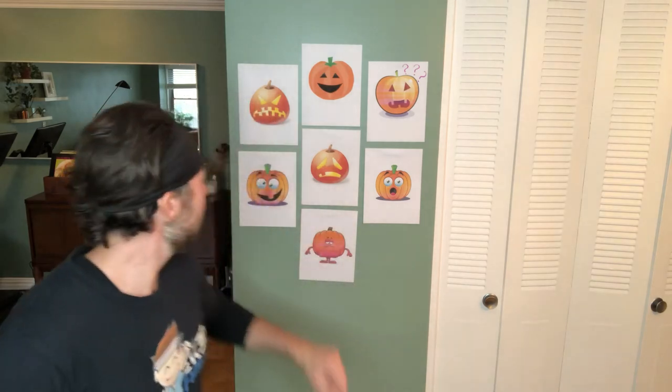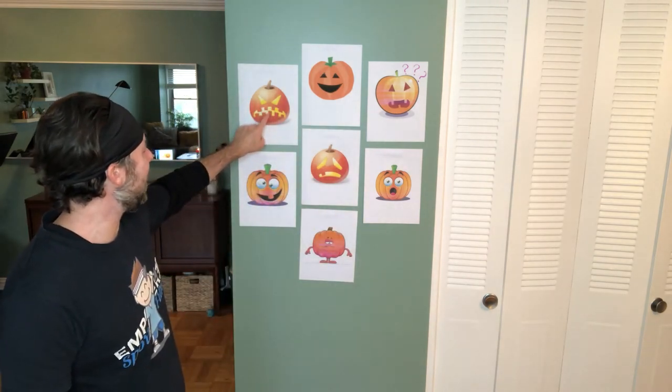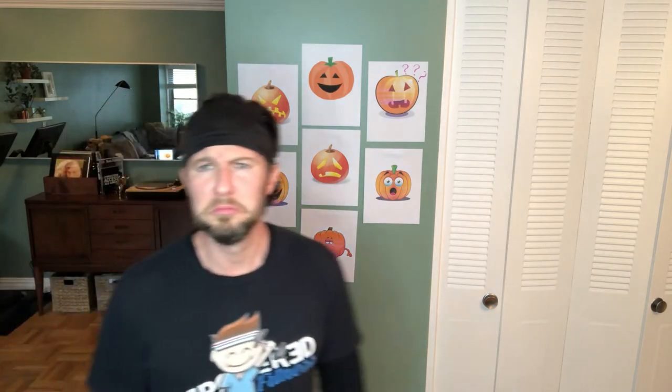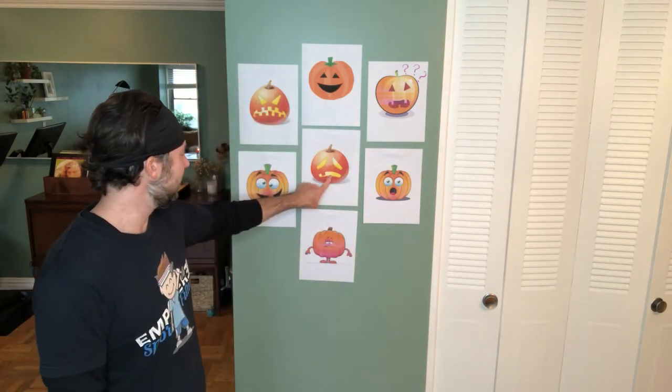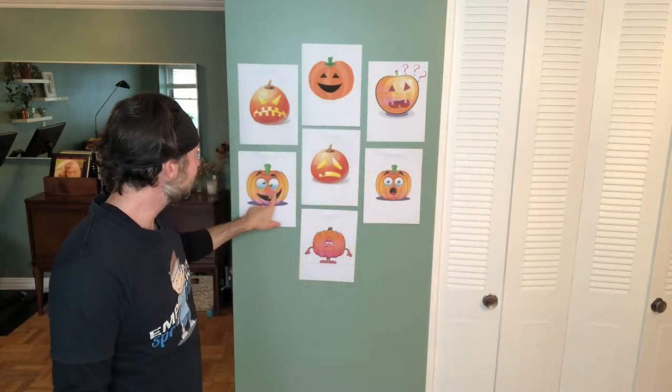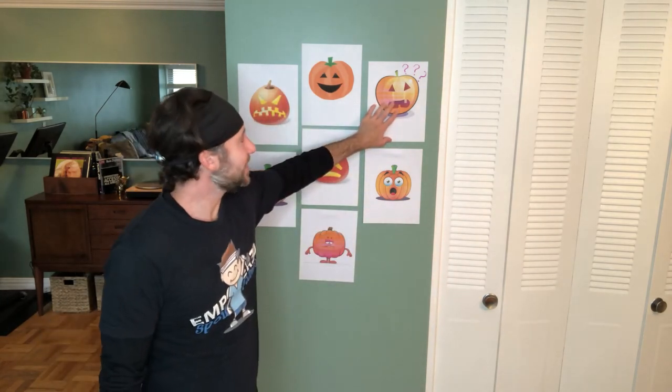What about our angry pumpkin? Can you find the angry pumpkin? Right here we've got our angry pumpkin. And what about our sad pumpkin? Where's our sad pumpkin? There's our sad pumpkin. And what about our silly pumpkin? Where's our silly pumpkin? Right here. And finally, where is our confused pumpkin? Where's the confused one? Right here.